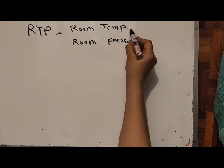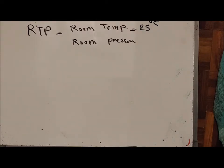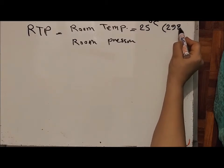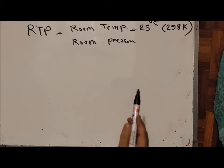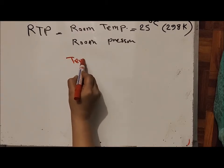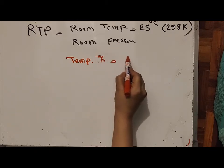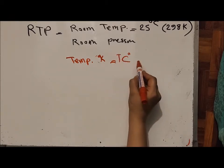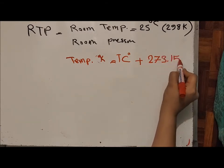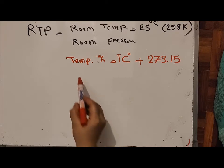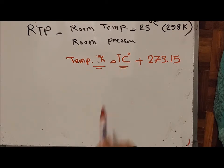To convert from Celsius to Kelvin, use the formula: temperature in Kelvin equals temperature in Celsius plus 273.15. In calculations you must use Kelvin, not Celsius. So if you see Celsius in the equation, first convert it to Kelvin. Also, the pressure under RTP is 1 atmosphere.